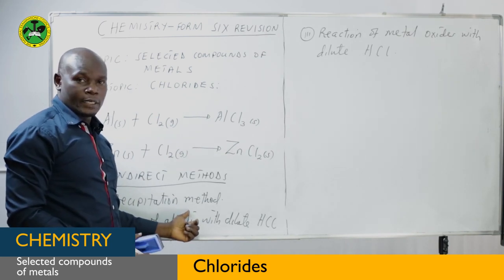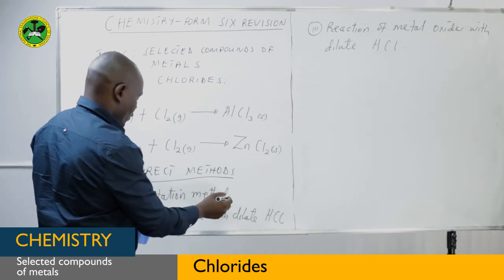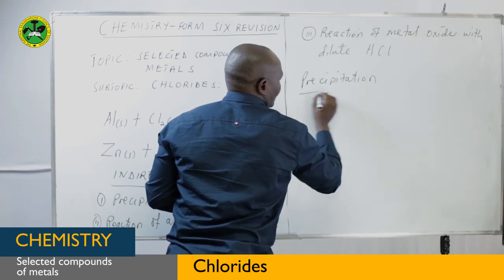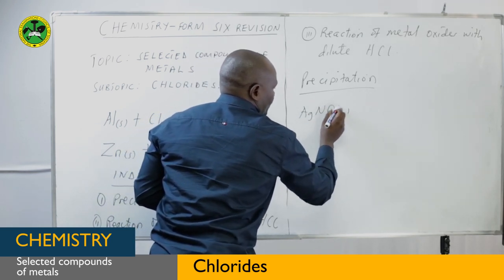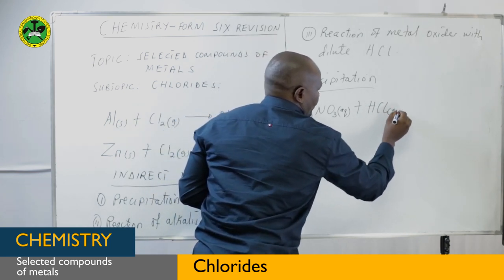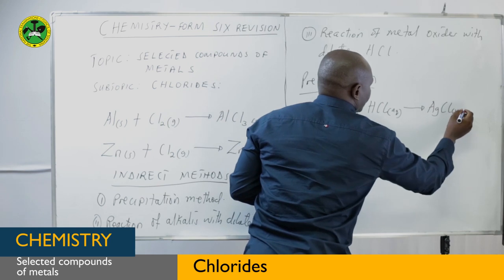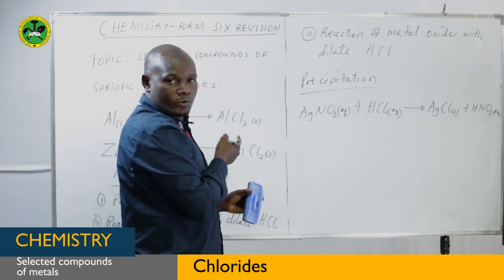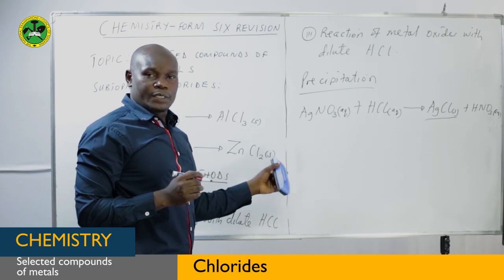The precipitation method is specifically used for preparation of insoluble chlorides. For example, if you have silver nitrate and treat it with a solution of diluted hydrochloric acid, the product obtained will be silver chloride, which is a solid precipitate, and the other product will be nitric acid. It's your task to balance the equation. This is what we call the precipitation method — what is obtained is silver chloride, which is our precipitate.